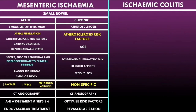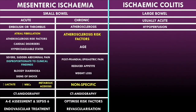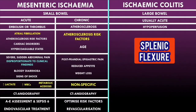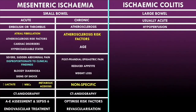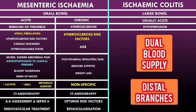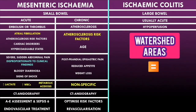A key difference between mesenteric ischemia and ischemic colitis is that ischemic colitis affects the large bowel. It usually presents acutely but can be very variable. Ischemic colitis is characterized by hypoperfusion to the large bowel. While the large bowel has a rich blood supply, there are watershed areas — specifically the splenic flexure and the rectosigmoid junction — which receive only distal branches of both the superior and inferior mesenteric arteries, making them particularly vulnerable to ischemia.